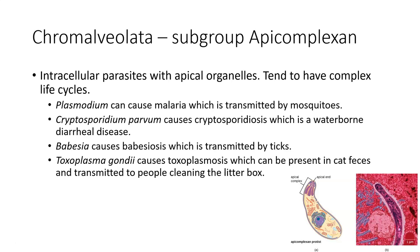Next are the apicomplexans. I used to joke they were called that because they had a complex life cycle, but their name actually means they have an apical complex — a little structure on the tip of the cell where they cluster certain organelles. They do still have a pretty complex life cycle. Plasmodium, of which there are different species, causes malaria, which is transmitted by the Anopheles mosquito.